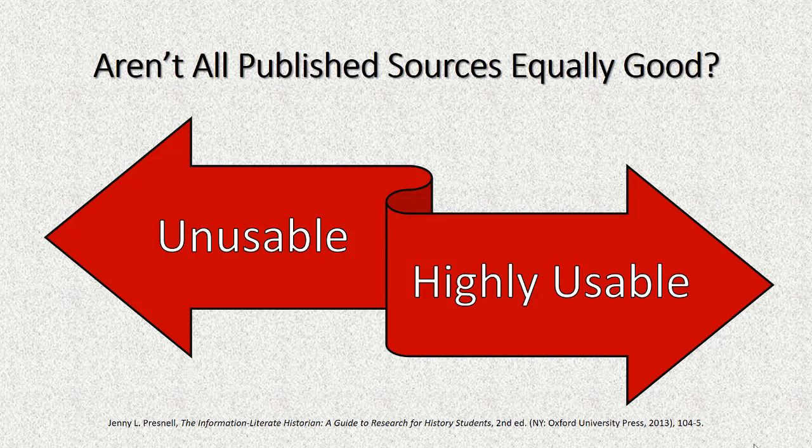But evaluation is not binary. Sources that have problems are not automatically useless. Imagine secondary sources falling on a continuum, a spectrum, from completely usable at one end through useful to highly usable at the other end. Where secondary sources fall on this continuum depends on how well or poorly they conform to a number of characteristics. Remember that we seek to find sources that are accurate, valid, and reliable, as well as relevant to your research.